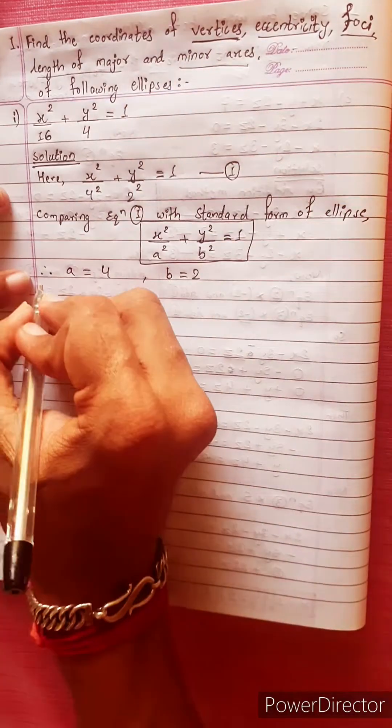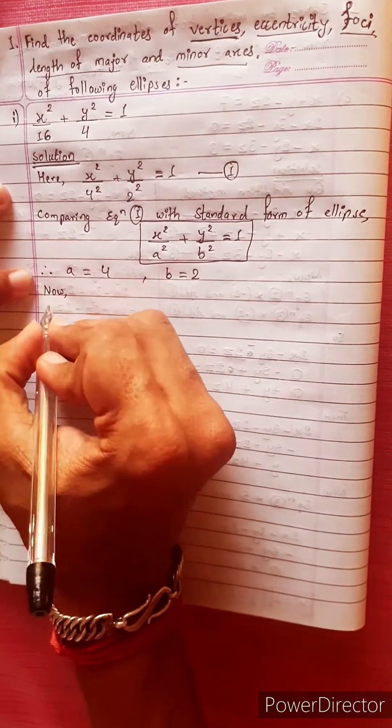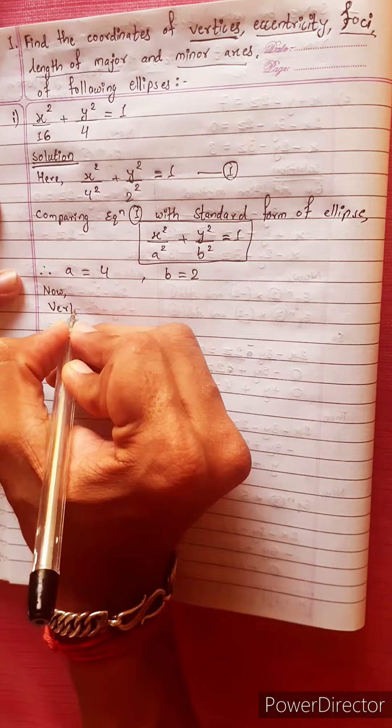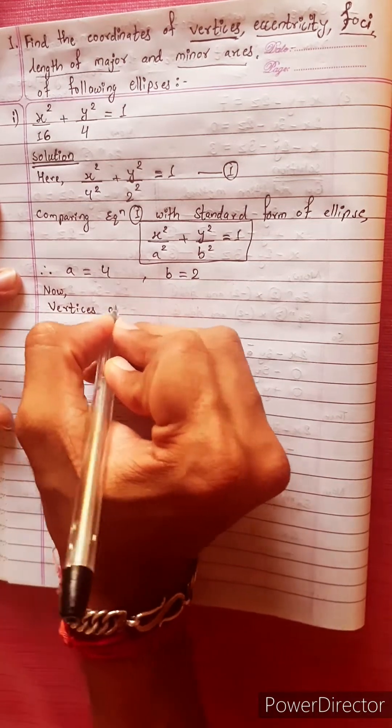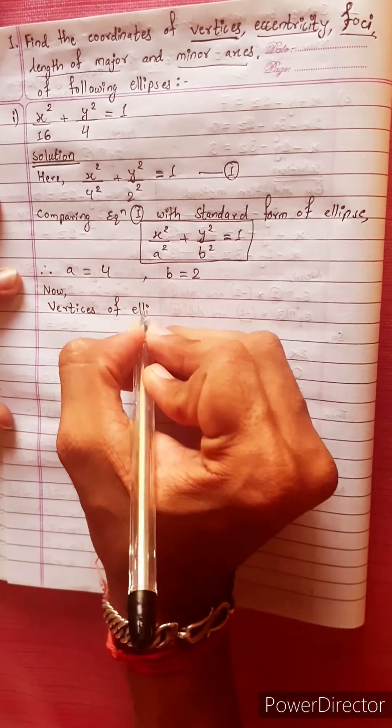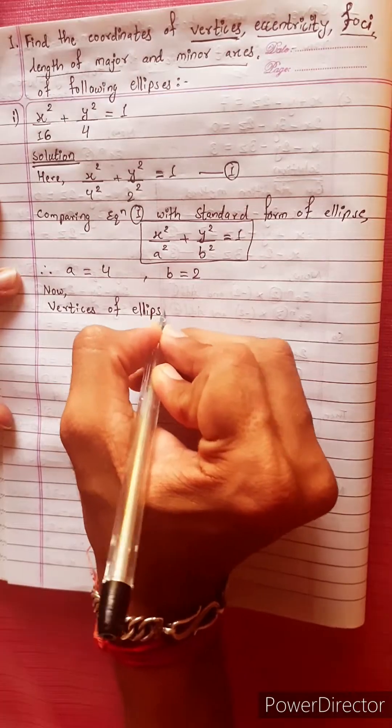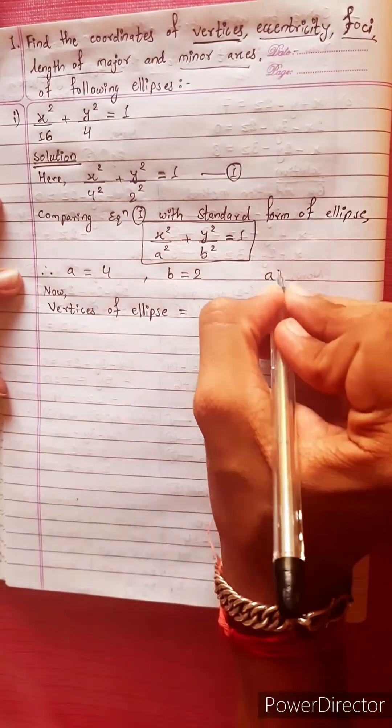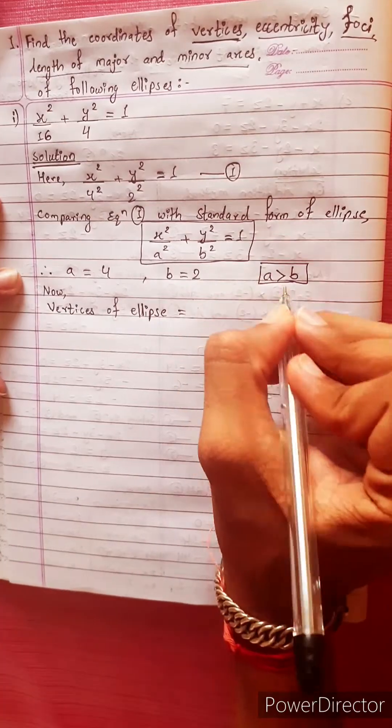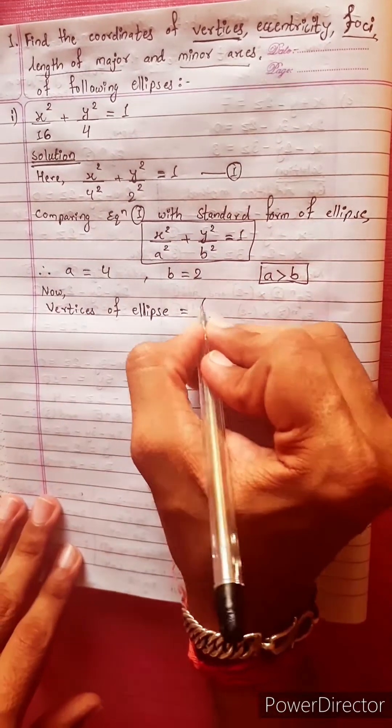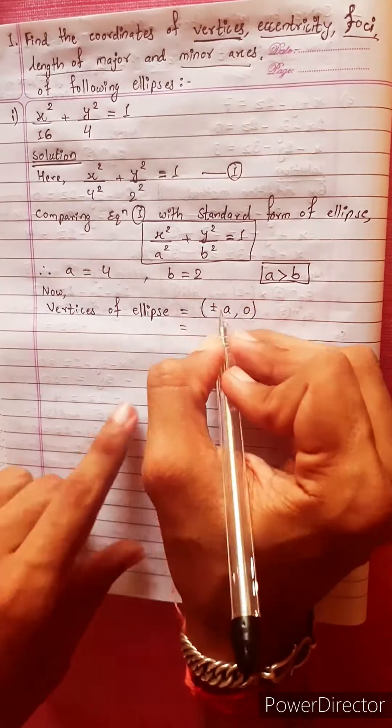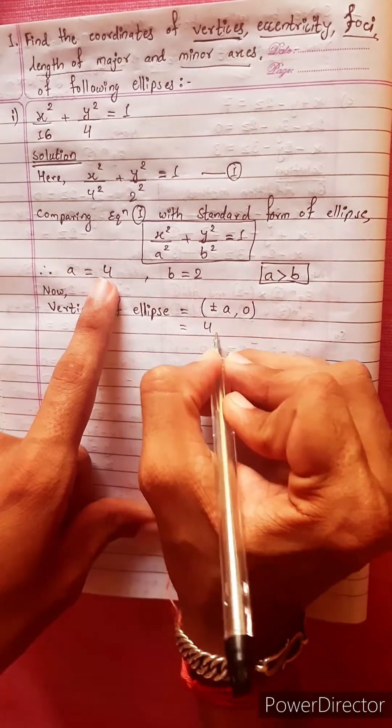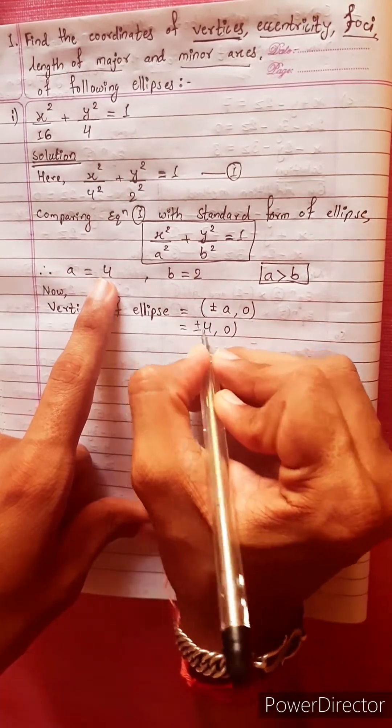Now, vertices of ellipse. Since a is greater than b, we use the formula plus minus a, 0. Equals to, since a is 4, we get plus minus 4, 0.